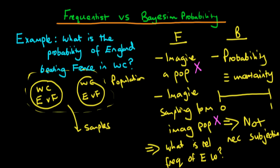The one thing that certainly isn't subjective about the Bayesian view of probability is how we update probability. We update probability in the only possible rational way, which is via use of Bayes' rule. That is certainly not a subjective view of probability, because that is the only rational way of updating probability in light of new information.